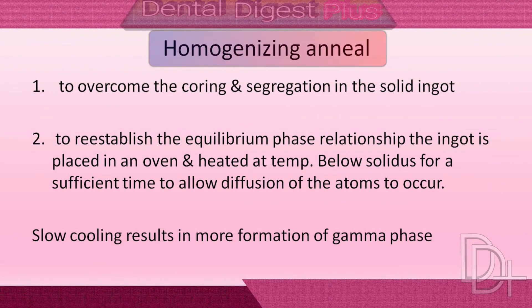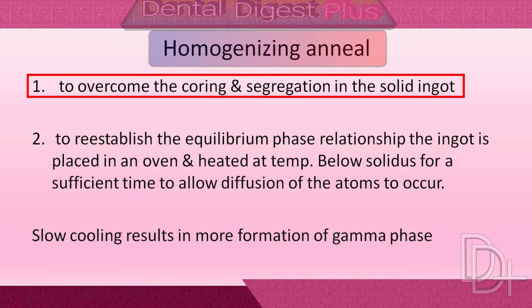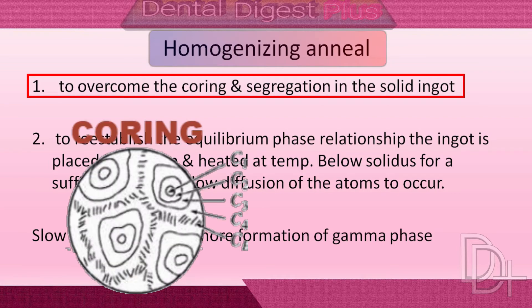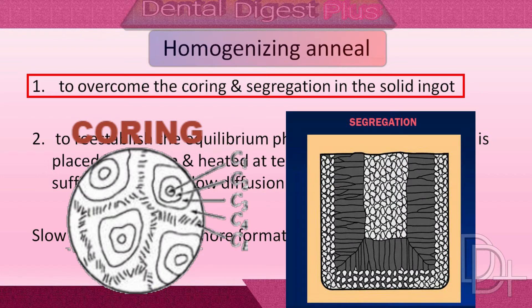As we have seen earlier, before cutting the ingot into smaller particles, homogenizing heat treatment is done. It is done simply to overcome the coring and segregation in the solid ingot. Here we need to understand these two terms: coring and segregation.